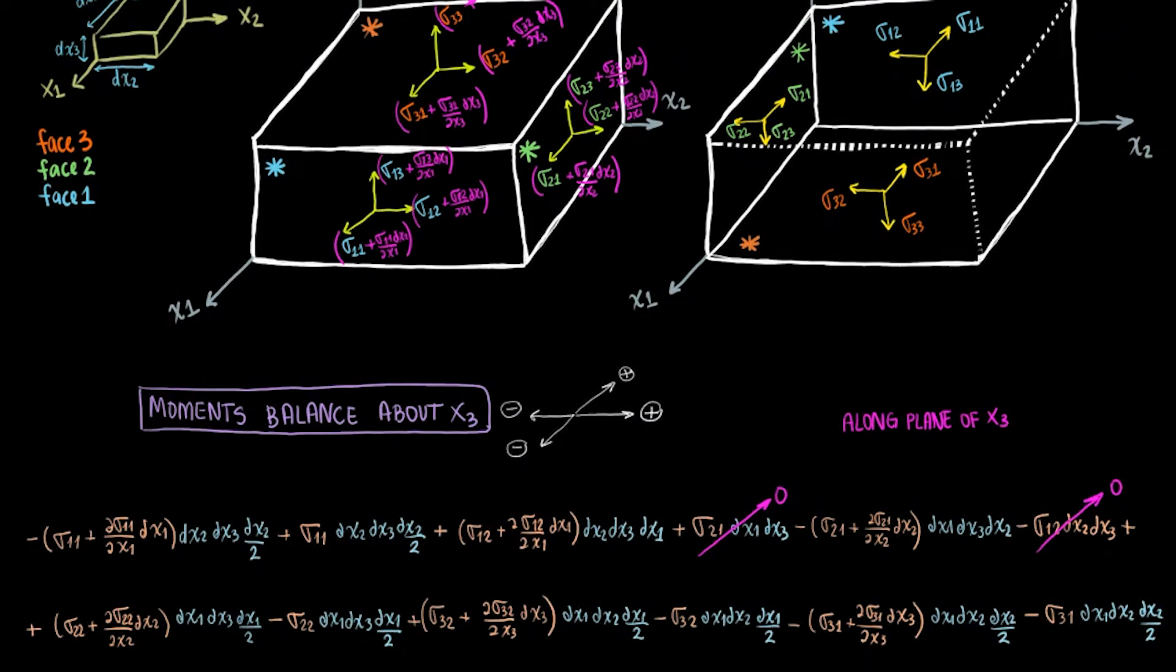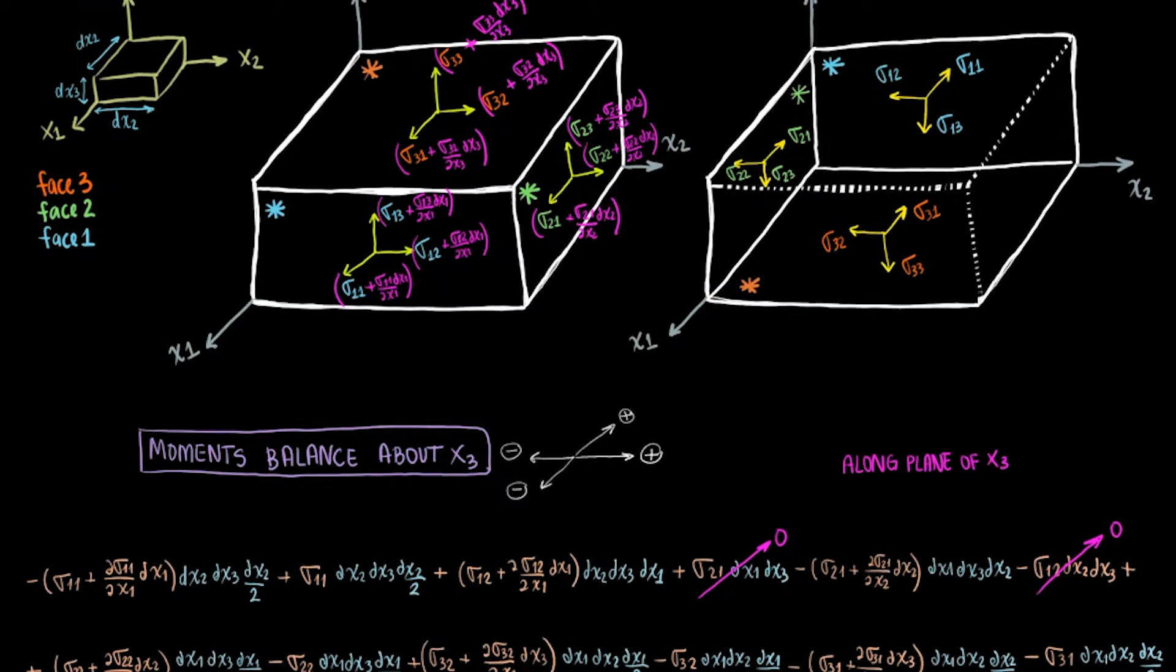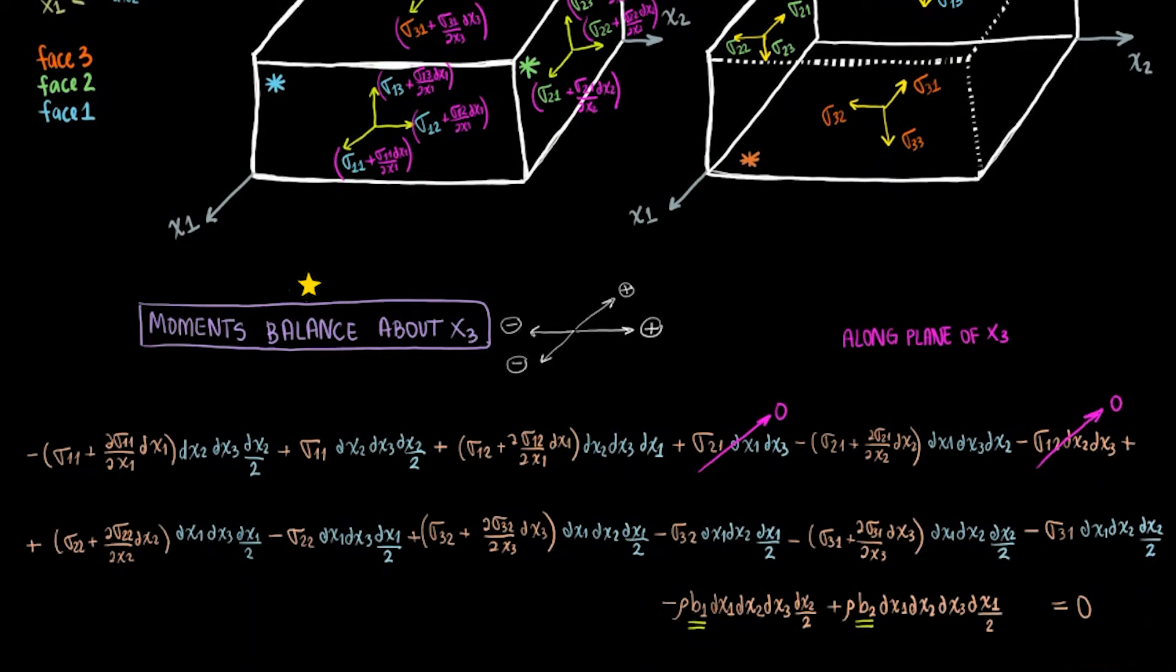The moment arms will be the perpendicular distance to the x3 axis. For instance, the moment arm for sigma 11 will be dx2 divided by 2 since sigma 11 is halfway between 0 and dx2 away from x3. Assume body forces are applied from the center of the cube. Then remember to pick the positive and negative directions on your coordinates to assign positive or negative values to the moments.